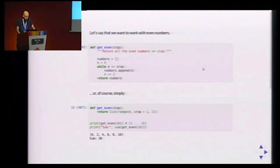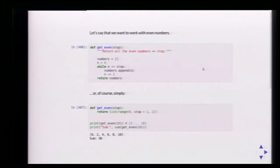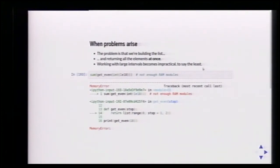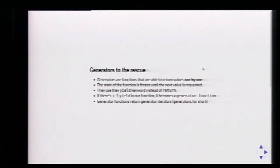The problem arises when we want to work with all even numbers in the world. We want a get_even function that gives many even numbers up to a threshold. We could write it simply, but if we want to sum billions of numbers, we can't because that won't fit in memory. That's when we use generators — they are functions able to return values one by one. The function state is frozen, we use yield instead of return, and when we hit a yield we return a value, then the function freezes until the next call to next().